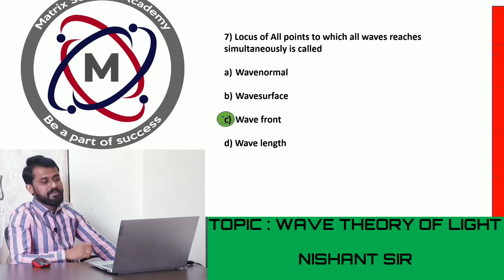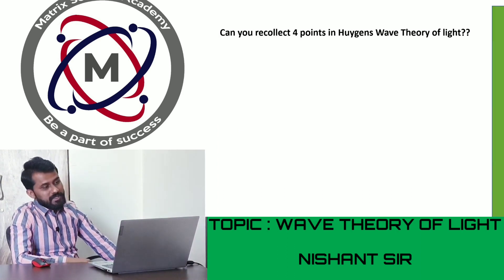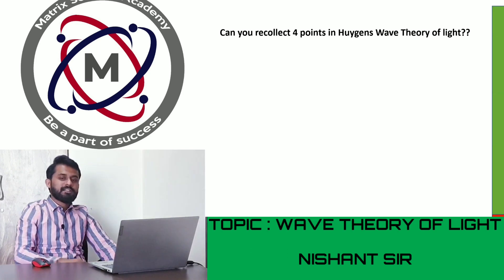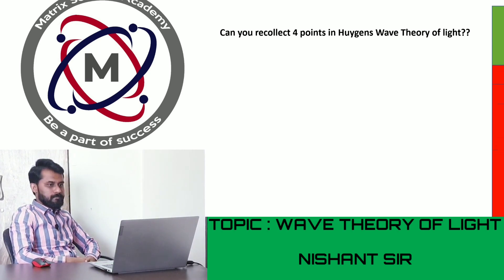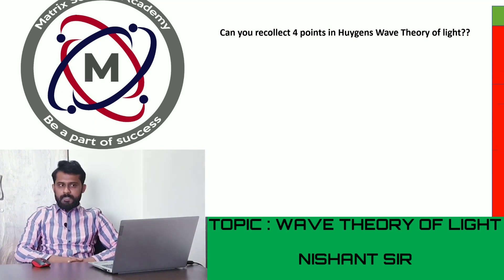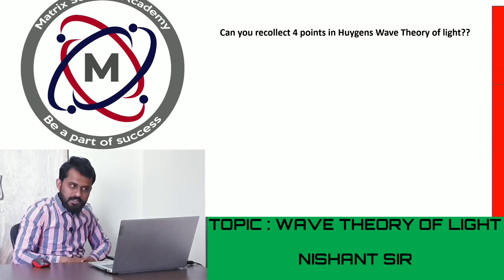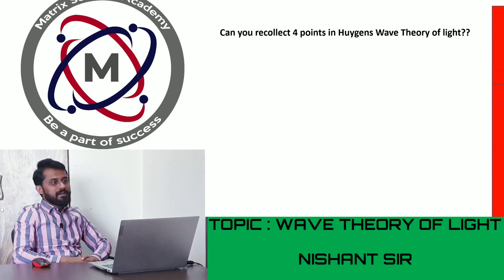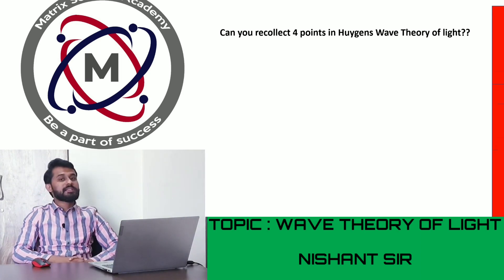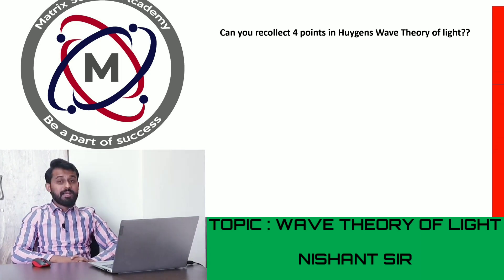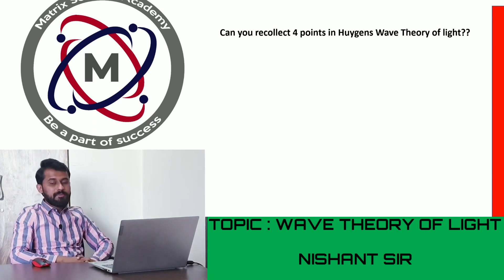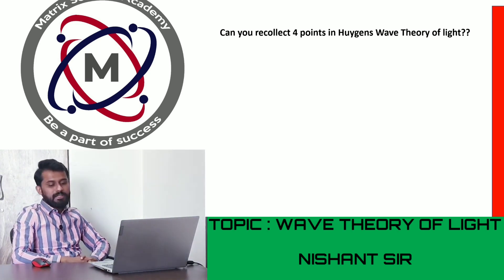Seventh question: the locus of all points to which a wave reaches simultaneously is called? Answer is C - wavefront. That is the definition of wavefront we discussed in the theory. Eighth question: can you recollect the four points of Huygens' wave theory? The four points are: first, light travels in the form of longitudinal waves; second, we get sensation of light when it falls on the retina; third, different colors are because of different wavelengths; fourth, luminiferous ether was proposed.